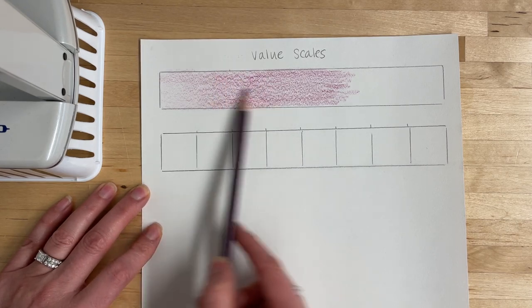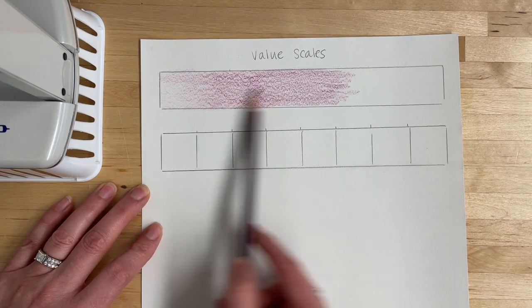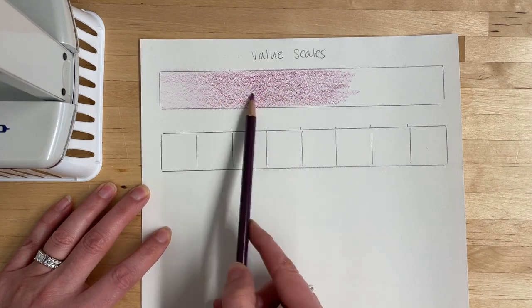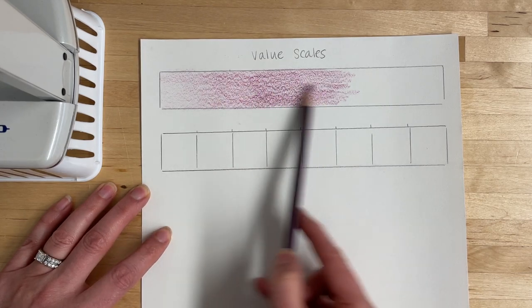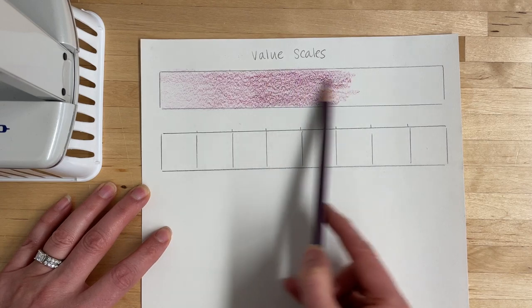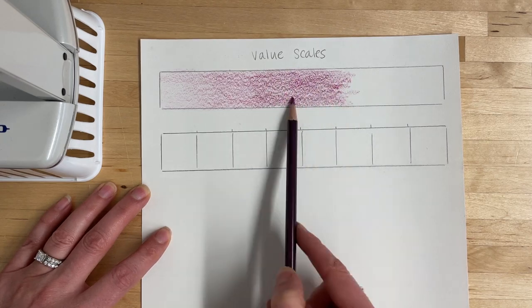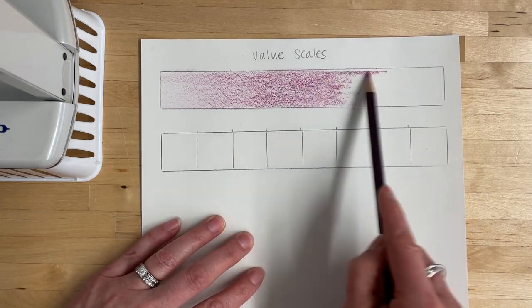I'm blending that very light value into my light and then back into my medium. I'm gradually increasing the pressure as I work my way down the value scale to the point where I get to the end.